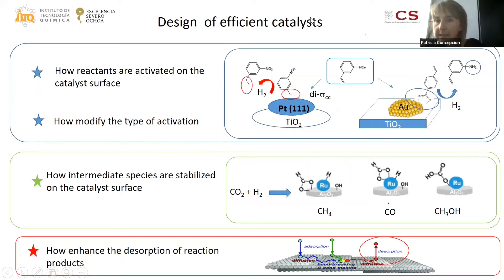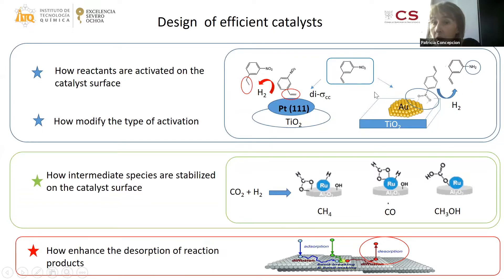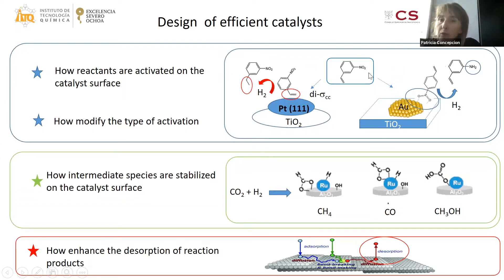For the design of efficient catalysts, we need to know how reactants are activated on the catalyst surface. For example, in the case of nitrostyrene: it can be activated by the nitro group and then evolve into aniline in the presence of hydrogen, or it can be activated by the carbon-carbon bond and evolve into nitroethylbenzene under hydrogenation. We also need to know how to modify this activation by changing the nature and state of the active sites.